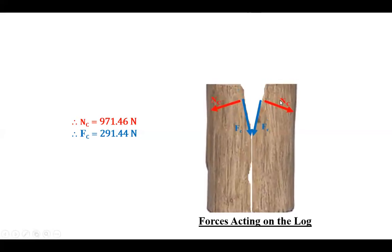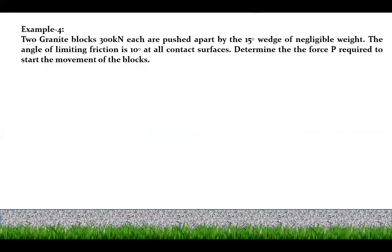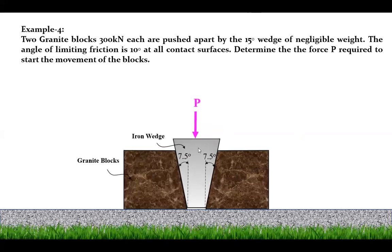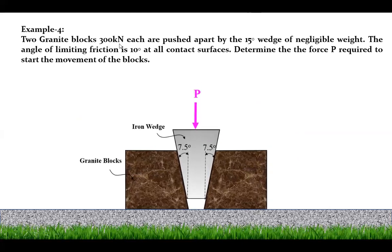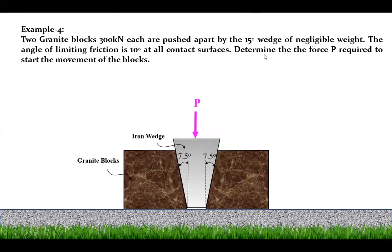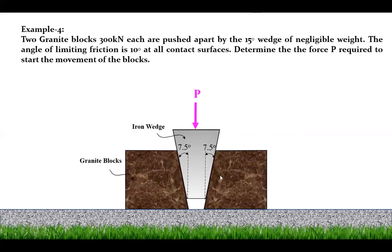Moving on to Example 4: two granite blocks of 300 kilonewtons each are pushed apart by a 15-degree wedge. The weight of the wedge is negligible. The angle of limiting friction — alpha — at all contact surfaces is 10 degrees. Determine the force P required to start the movement of the blocks.